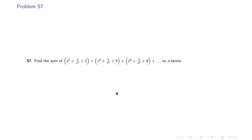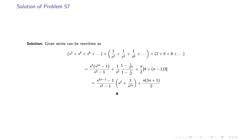Problem 57: Find the sum of (x² + 1/x² + 2) + (x⁴ + 1/x⁴ + 5) + (x⁶ + 1/x⁶ + 8) up to n terms. If you look carefully, it is the sum of two GPs and one AP. The first GP is x² + x⁴ + x⁶ + …, the second GP is 1/x² + 1/x⁴ + 1/x⁶ + …, and the AP is 2 + 5 + 8 + …. Applying the formulas gives the result: x²(x^(2n) − 1)/(x² − 1) + (1 − 1/x^(2n))/(1 − 1/x²) + n(3n + 1)/2.